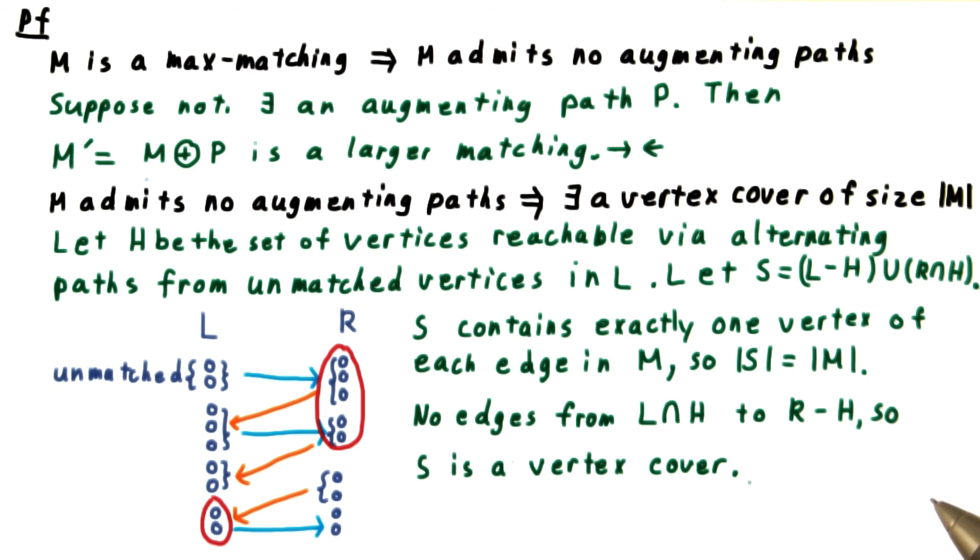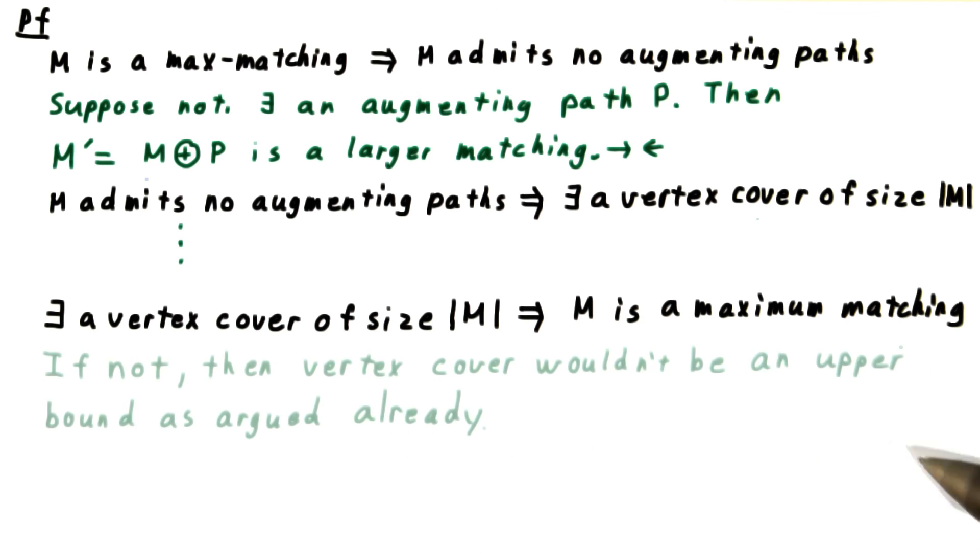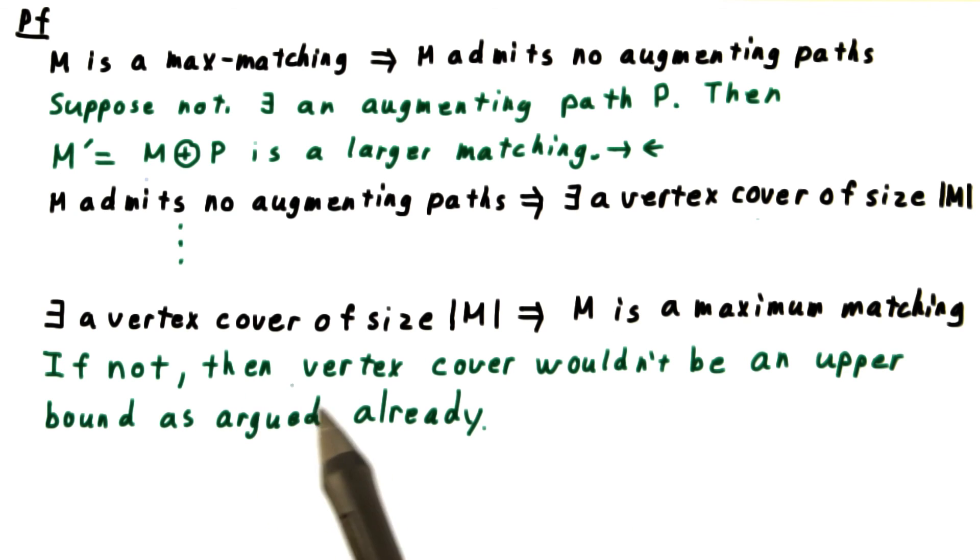Finally, we have to prove that the existence of a vertex cover that is the same size as a matching implies that the matching is a maximum. And this follows immediately from our discussion that a vertex cover is an upper bound on the size of a matching. So if it wasn't a maximum matching, then the whole idea of vertex cover wouldn't be an upper bound as we've argued already.